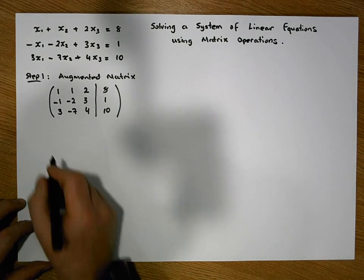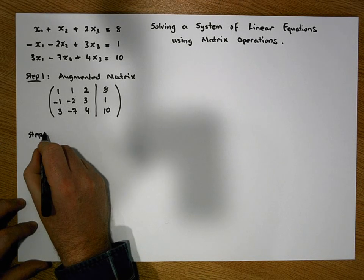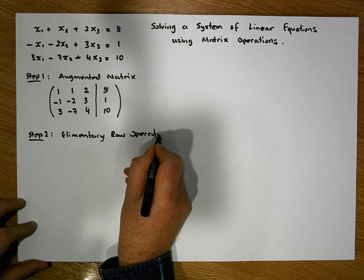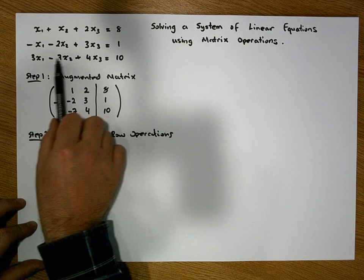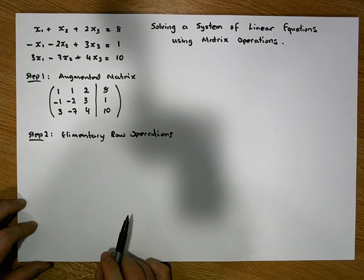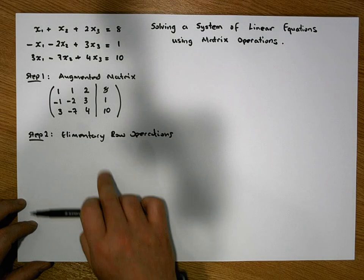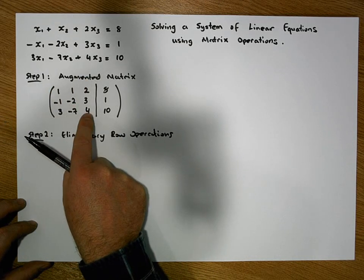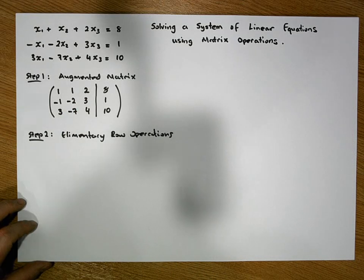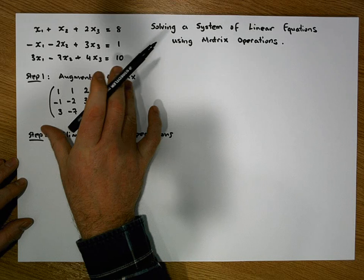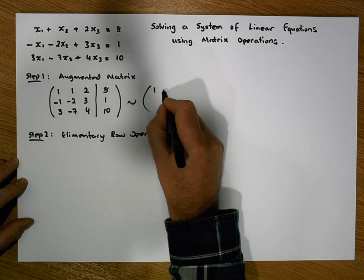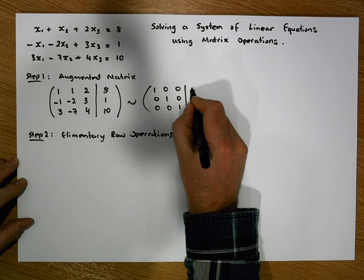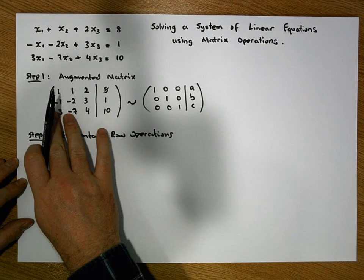Step two is to use elementary row operations to reduce the left-hand matrix in the augmented matrix down to the identity matrix. By adding multiples of rows to other rows, we reduce it to a matrix with leading ones on the main diagonal and zeros everywhere else — that is, the 3×3 identity matrix with values A, B, C on the right.